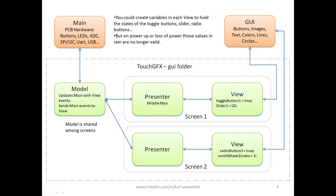You can create variables in the view to save the state of the button or slider value. On screen 2, you might have a radio button set to true and a scroll wheel index at 3. But if you lose power and power back up, those values were saved in RAM and are no longer valid.